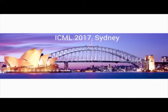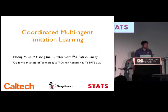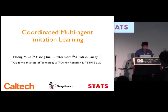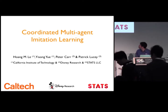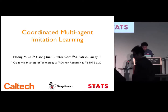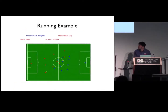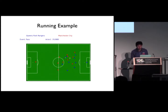Thanks, Kaja. Thanks, everyone, for being here. This is a joint work that I did with Professor Yi Song-Yui at Caltech and our collaborators at Disneyland Stats. Let's get right to it. In this work, we study imitation learning for multiple coordinating agents.